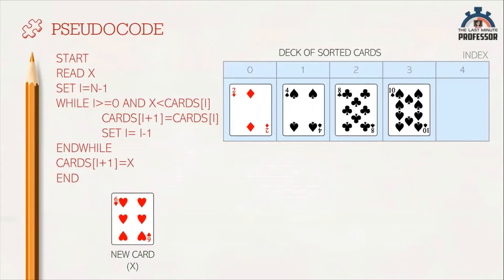Suppose in this case, x is the new value to be inserted and it takes the value 6. We have already 4 cards arranged, therefore the value of n is 4. Here in this case, i takes the value n-1, that is 3.